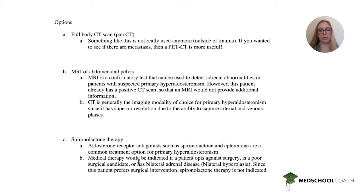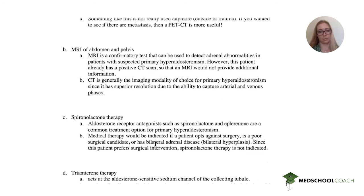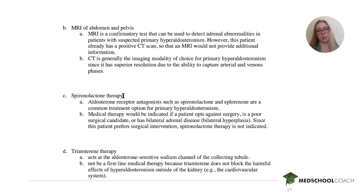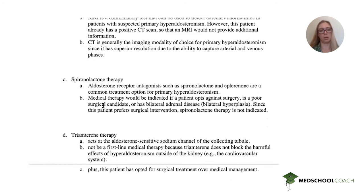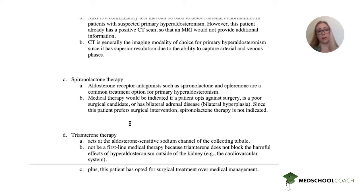Spironolactone therapy — aldosterone receptor antagonists — is a common treatment for primary hyperaldosteronism; however, this patient already said she wants surgery. Also, spironolactone and triamterene are great for patients with bilateral adrenal disease where you simply cannot do surgery. Triamterene acts on the aldosterone-sensitive sodium channel, but it doesn't address the effects of hyperaldosteronism outside of the kidney. So if we had to choose a drug, we would choose spironolactone.